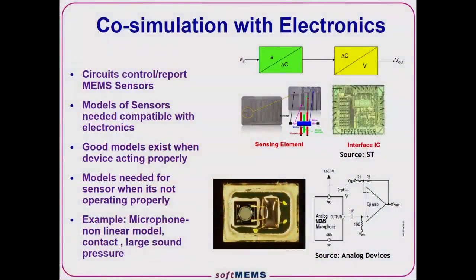MEMS sensors are always combined with electronics. A typical microphone is packaged with an ASIC to analyze and drive its signals, so everywhere we find a MEMS, we find some sort of circuit processing. Our MEMS sensor models have to be compatible with electronics design tools. Good models often exist when the device is working, but circuit and systems designers complain that sensor models typically don't model the behavior they're interested in—like what happens when a microphone slams into something under overpressure, or when MEMS parts stick together in a big nonlinear event. We need good models that work over the full regions of operation.